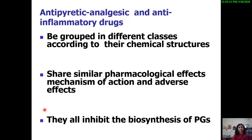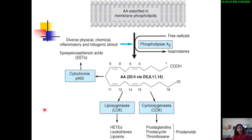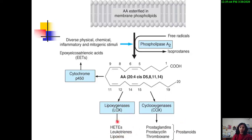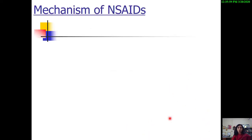All NSAIDs share the characteristic that they inhibit the biosynthesis of prostaglandins. Arachidonic acid, derived from membrane phospholipids, is acted upon by phospholipase A2 and diverted into two pathways: the lipoxygenase pathway, responsible for production of leukotrienes which mediate bronchoconstriction and bronchial asthma, and the cyclooxygenase pathway, which produces prostaglandins having both inflammatory and housekeeping functions. We will continue with the further mechanism — specifically the difference between COX-1 and COX-2 and how it translates to utility and GIT side effects.